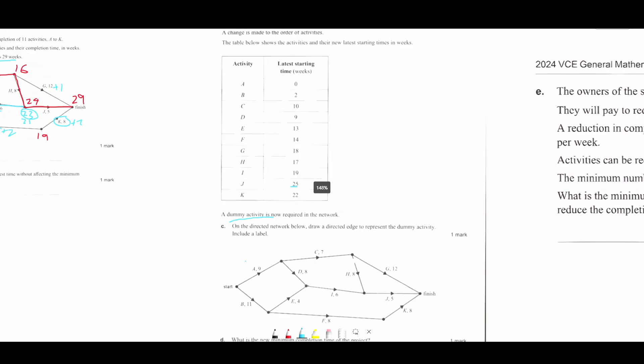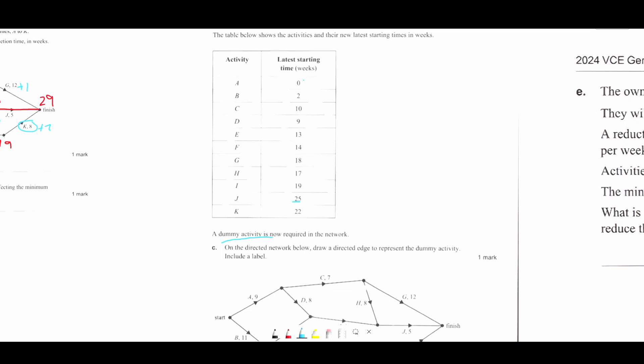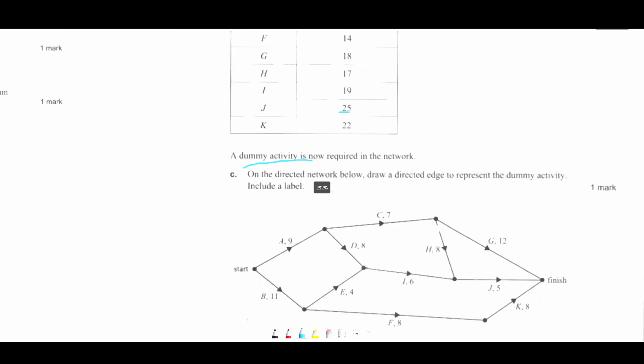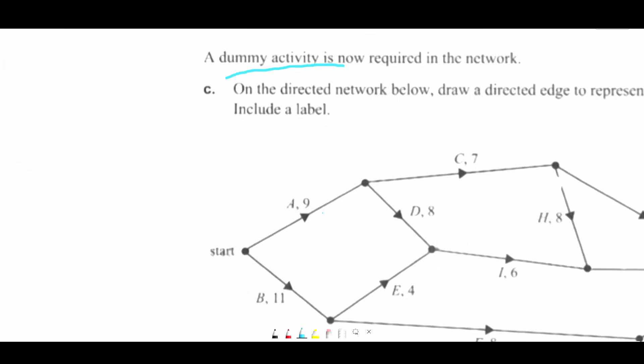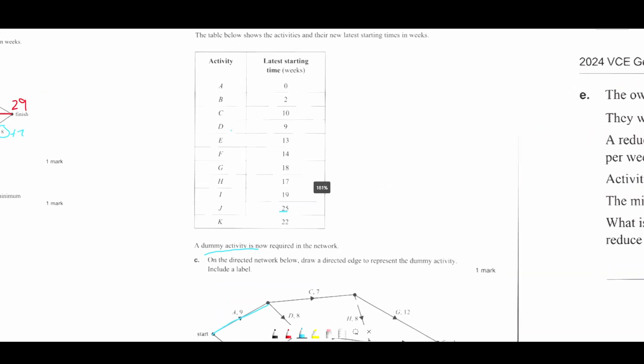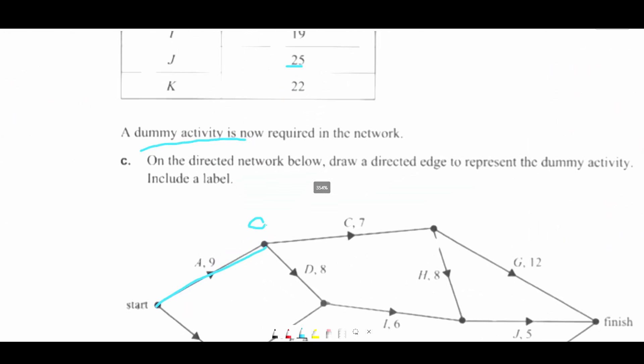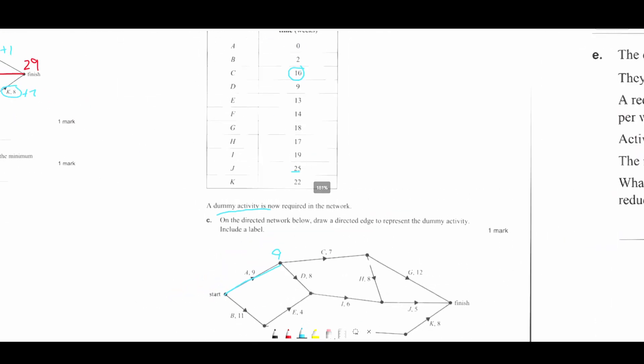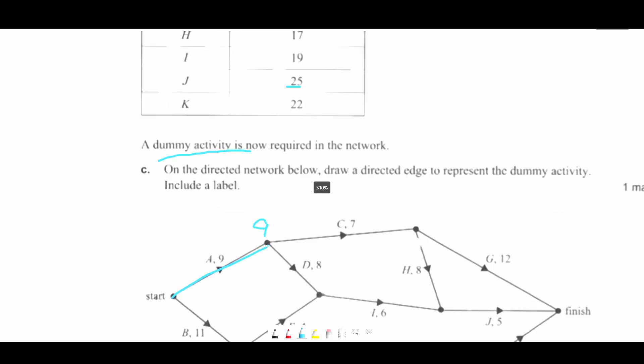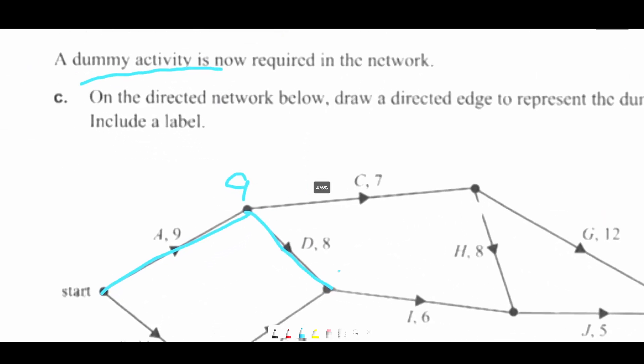So we can start chronologically. So the latest start time of 0 for A. That means A is on the critical path because there's only two options from the start, which is A or B. But A is 0 and B is 2. So the critical path is this way. And now it says C is 10. D is 9. So D is on the critical path. So 9 plus 8 is 17.